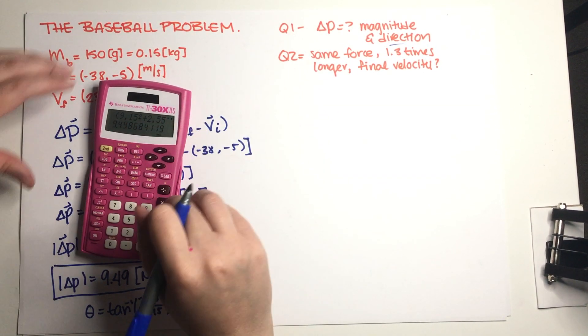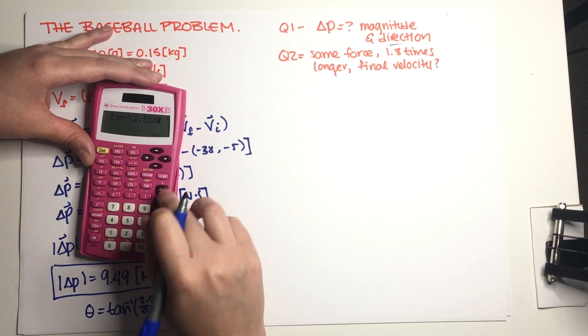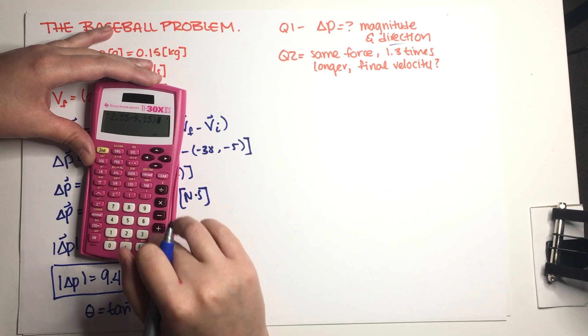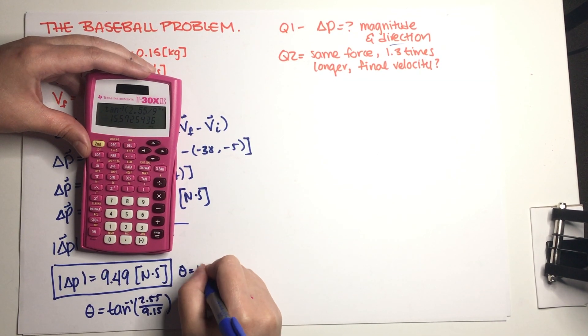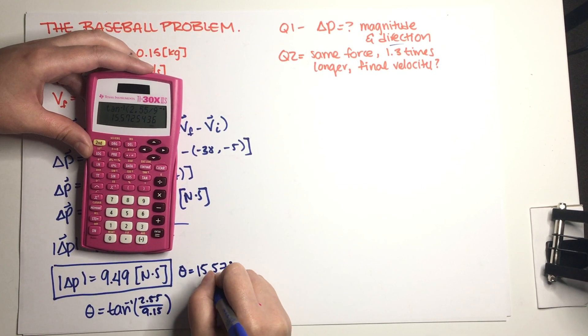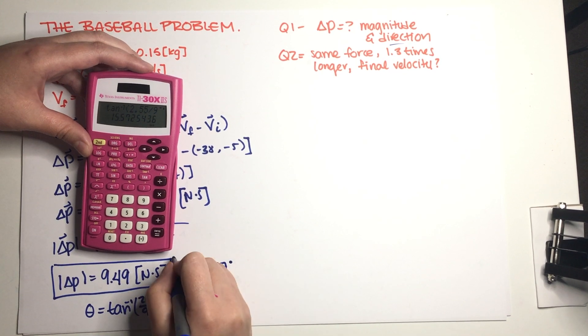So this is 2.55 over 9.15. So the angle is going to be equal to, let's just see, 2.55 divided by 9.15 is equal to 15.57 degrees north of east.